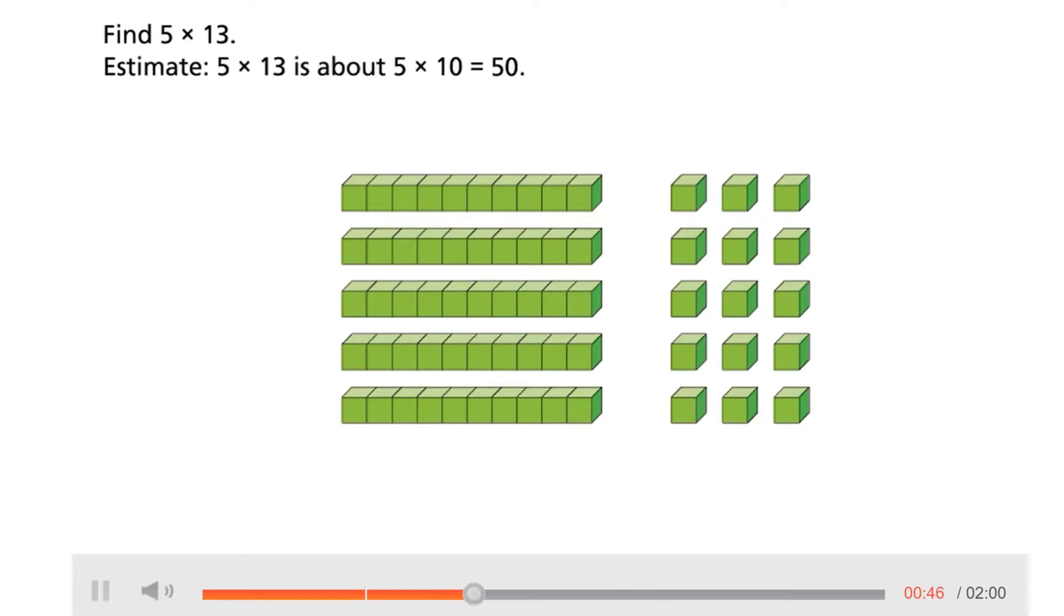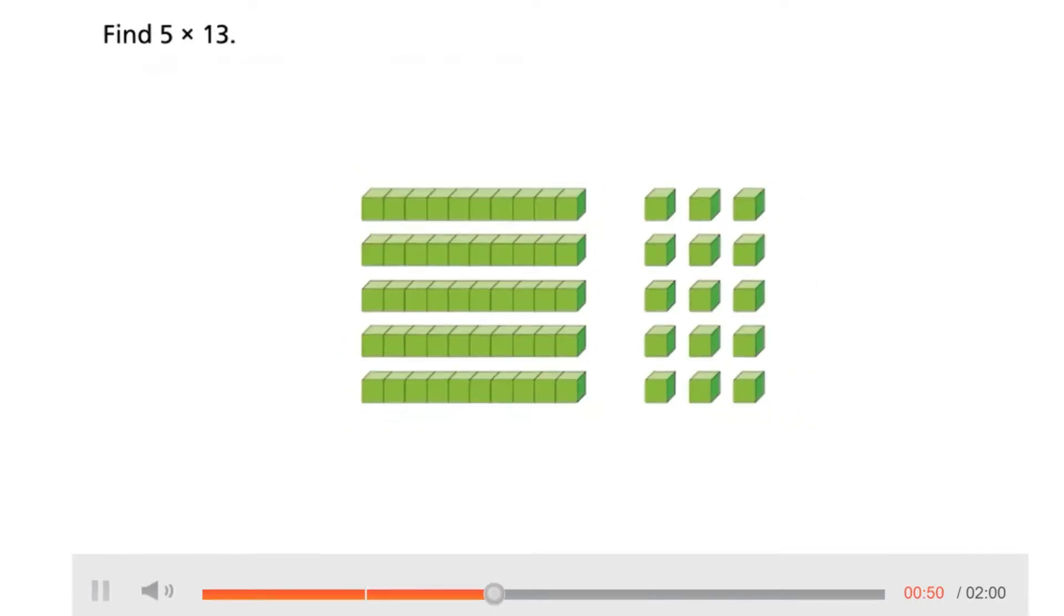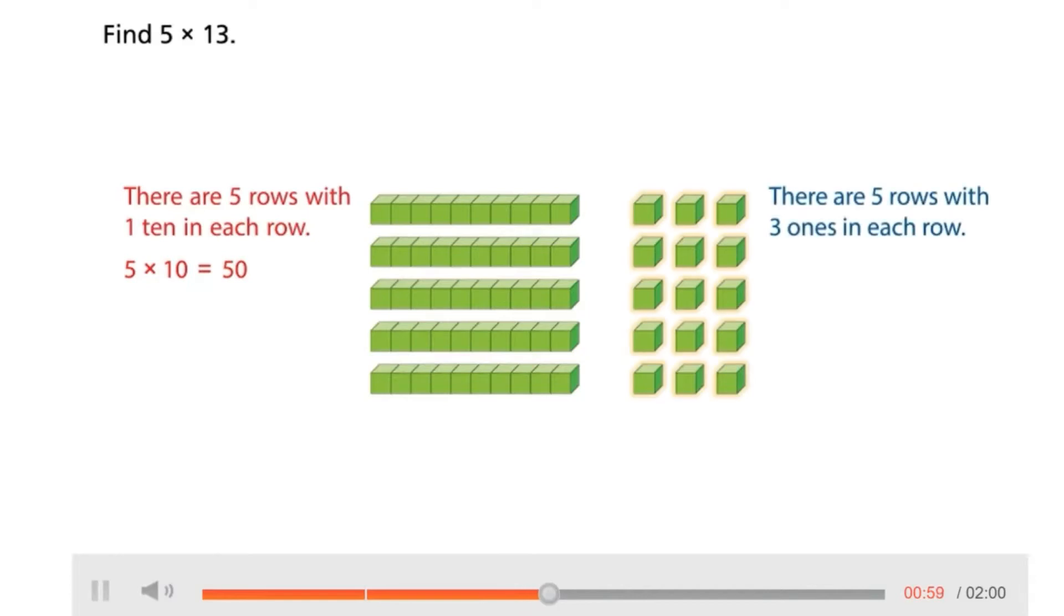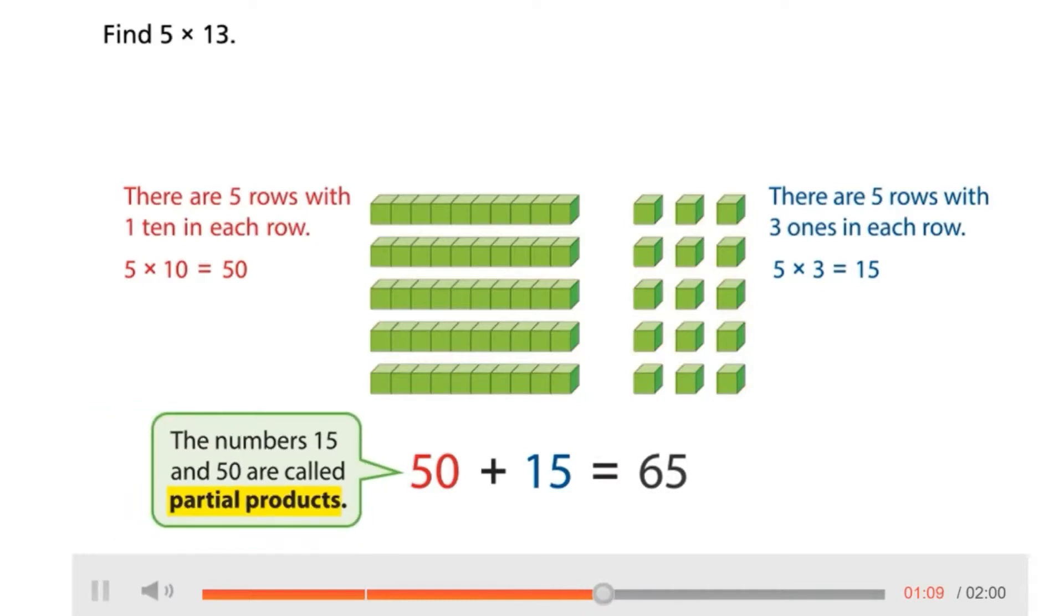5 times 13 is about 5 times 10 equals 50. There are 5 rows with 1 ten in each row. 5 times 10 equals 50. There are 5 rows with 3 ones in each row. 5 times 3 equals 15. 50 plus 15 equals 65. The numbers 15 and 50 are called partial products. 65 is the product.